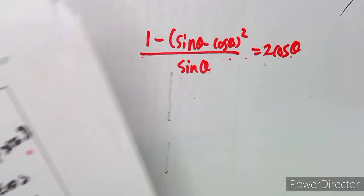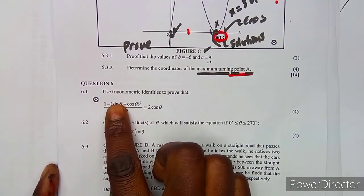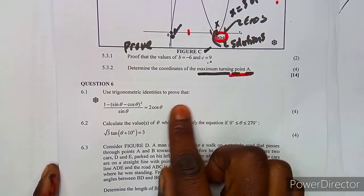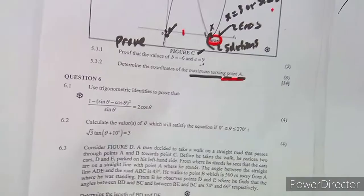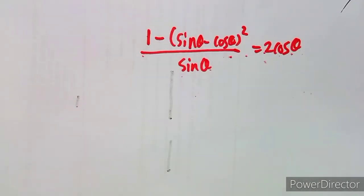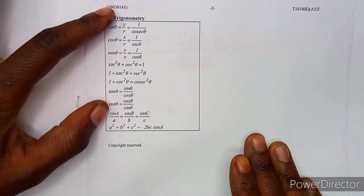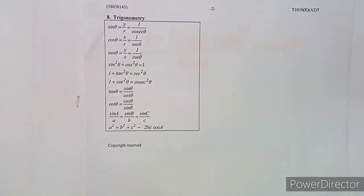We're given an identity which we are asked to prove. This was the exam question — using trigonometric identities, we have four marks to prove it. From your formula sheet under trigonometry, this is what we have: these are the identities and ratios that you're going to be given and use whenever you attempt a question under trigonometry.